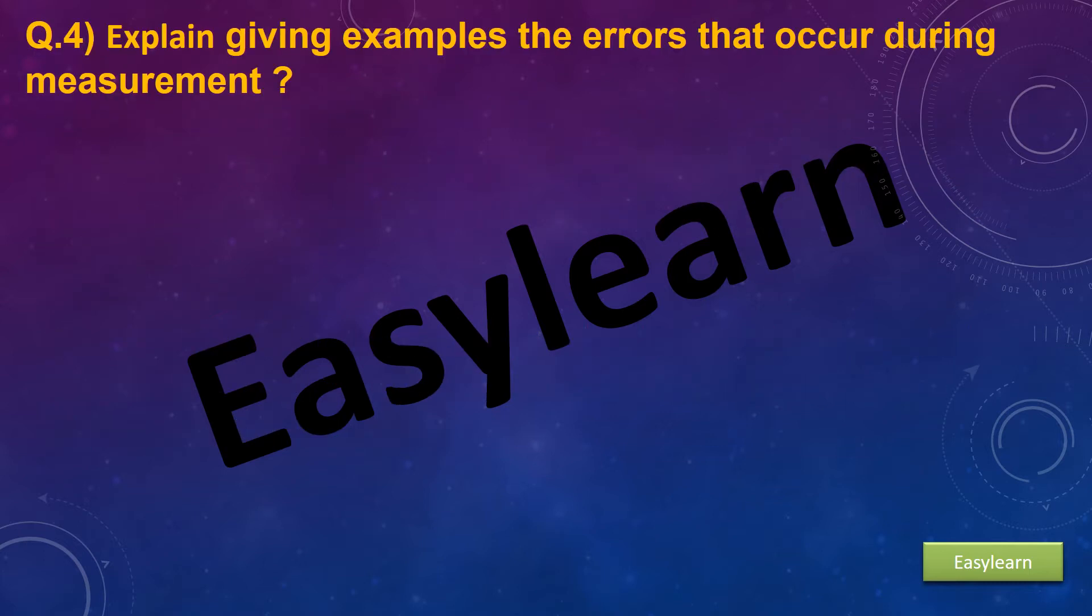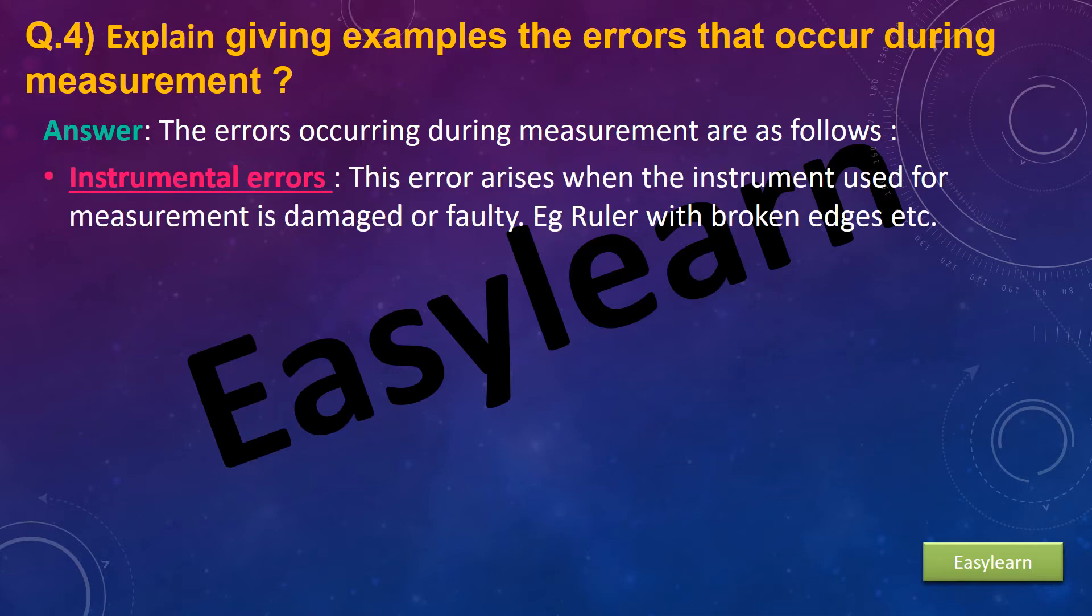Question 4: Explain, giving examples, the errors that occur during measurement. Answer: The errors occurring during measurement are as follows. First, instrumental errors. These errors arise when the instrument used for measurement is damaged or faulty. Example: ruler with broken edges.